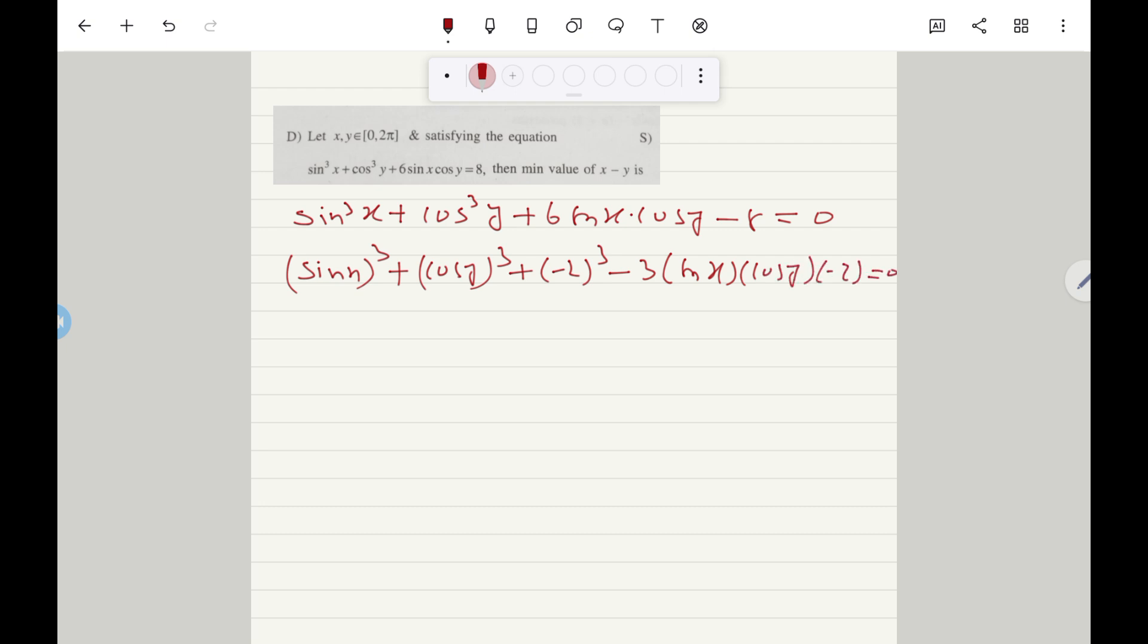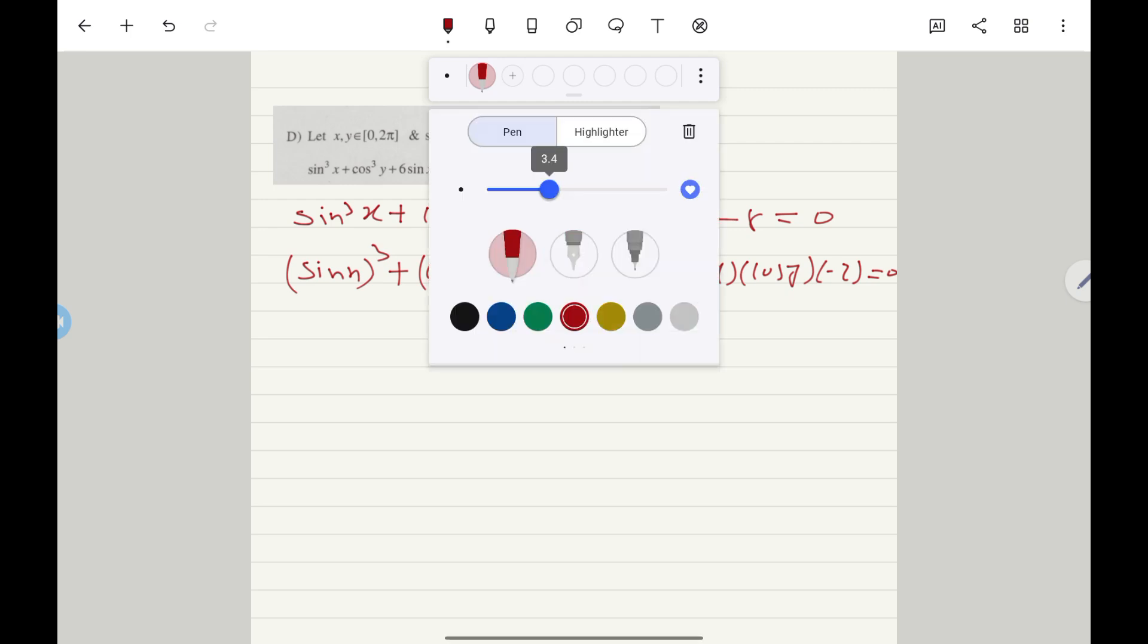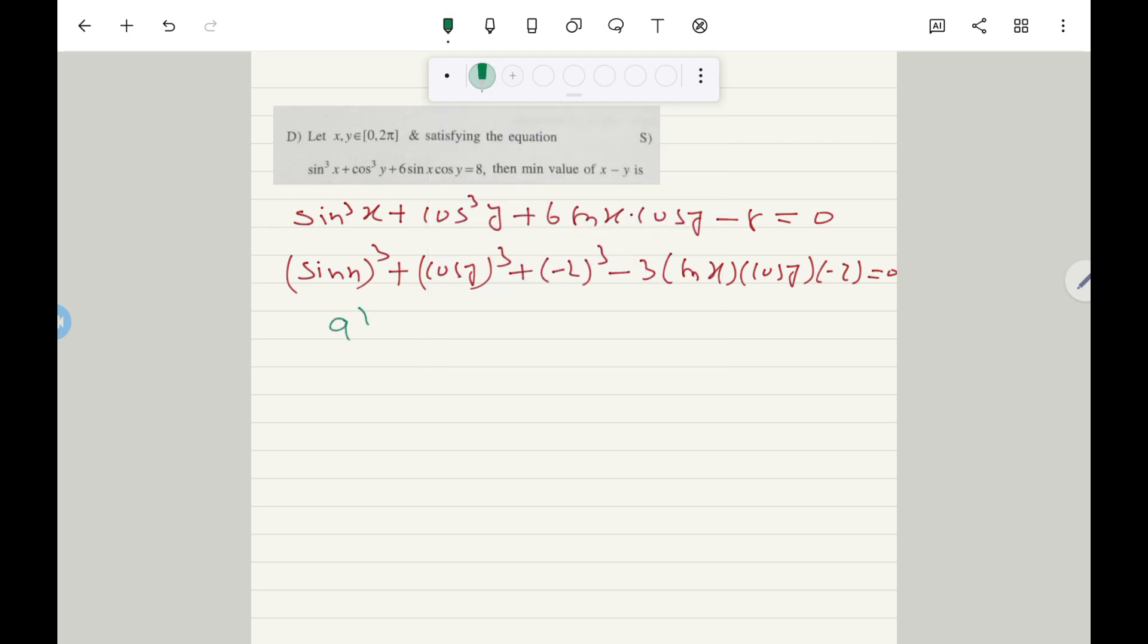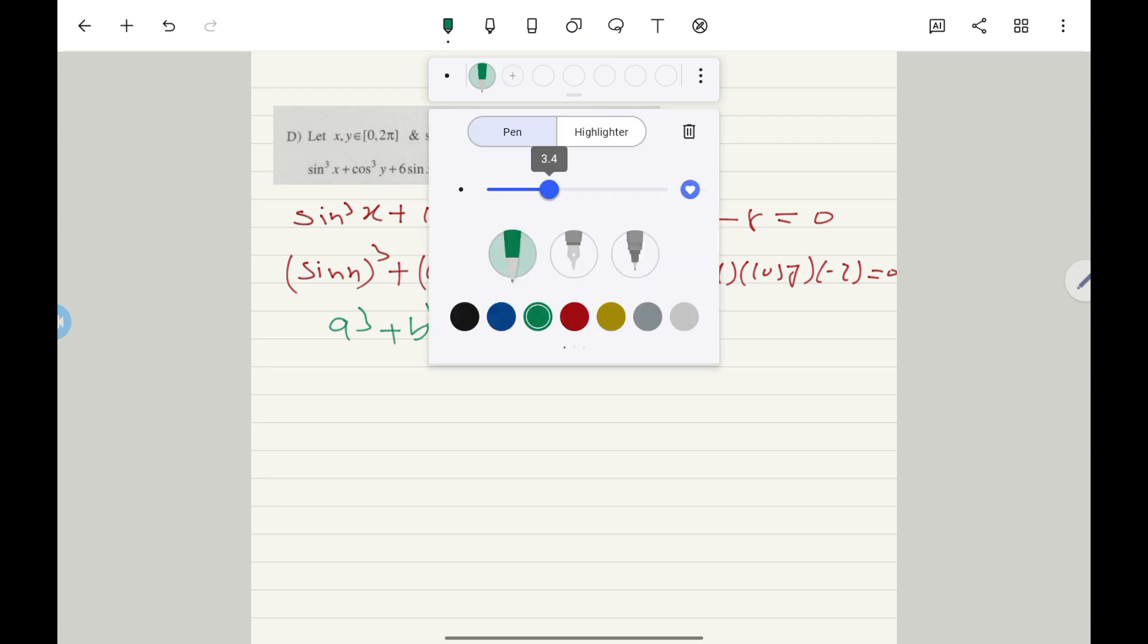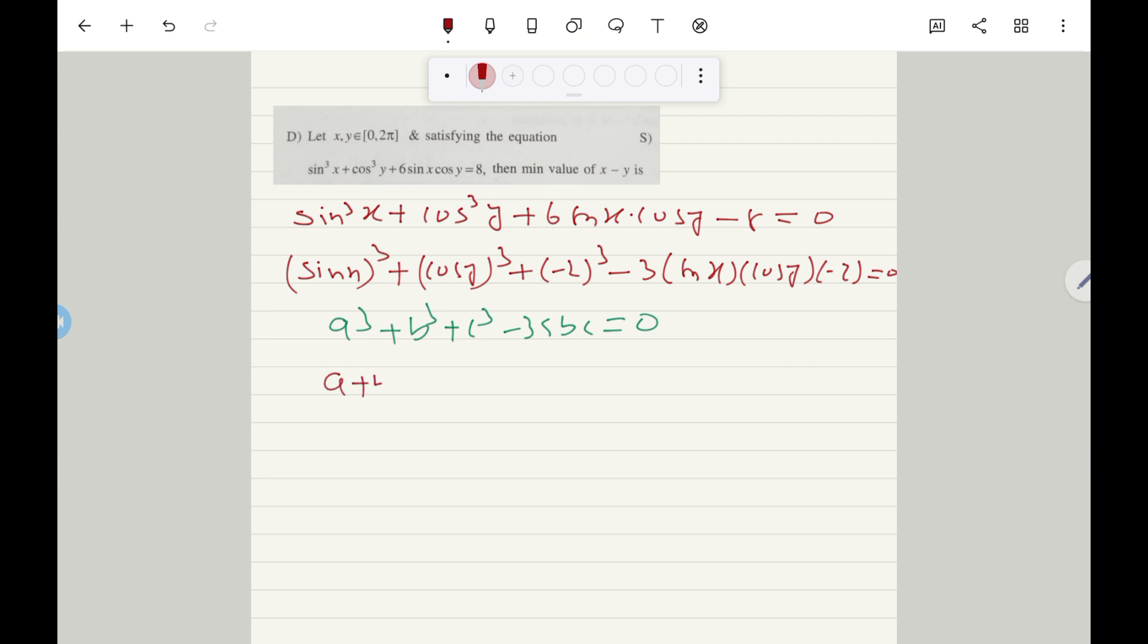Now this is in the form of a³ + b³ + c³ - 3abc = 0. This happens only when either a + b + c = 0, or a = b = c.